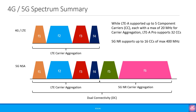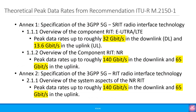Speed is just one of the requirements — there are many more that are outside the scope of this presentation. Looking at the peak data rates for 5G standalone, it would be a maximum of 140 Gbps in the downlink and 65 Gbps in the uplink. There is no dual connectivity with the LTE part in case of 5G standalone, so no additional data rate gain due to 4G.